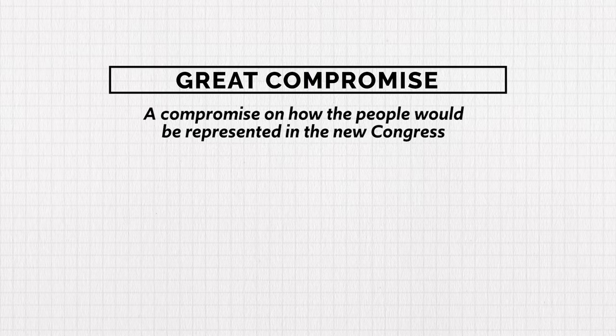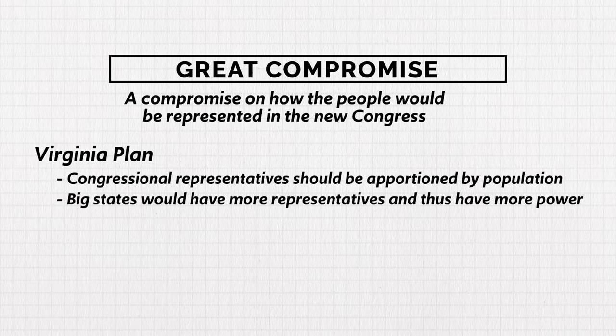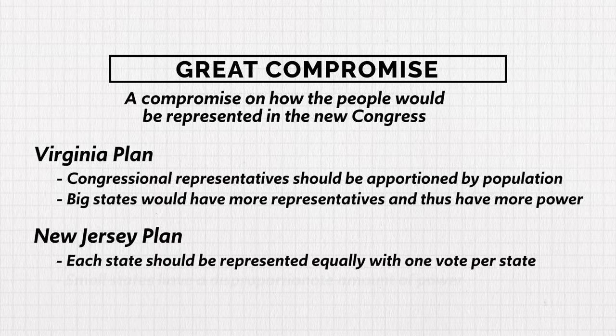You need to know four compromises. First was the Great Compromise — a compromise on how people would be represented in Congress. The Virginia Plan argued that congressional representatives should be apportioned by population, giving big states more representatives and thus more power. Small states objected and proposed the New Jersey Plan, arguing each state should be represented equally with one vote per state, which would give small populations the same power as large ones.